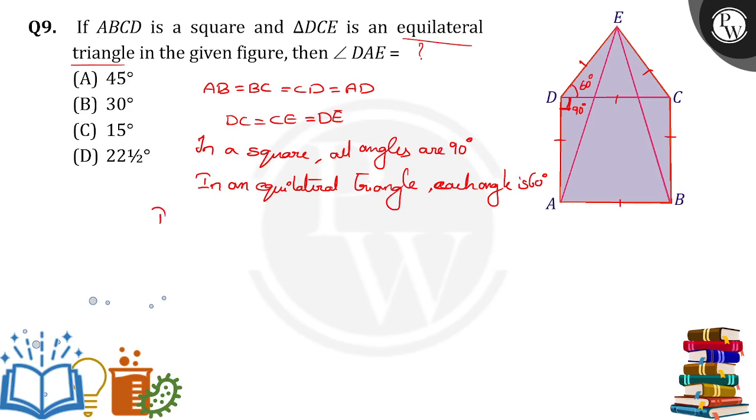So if I take triangle DAE, I am taking this DAE triangle. In that, angle D is equal to 90 degrees plus 60 degrees. So I will get 150 degrees here. And AD is equal to ED.